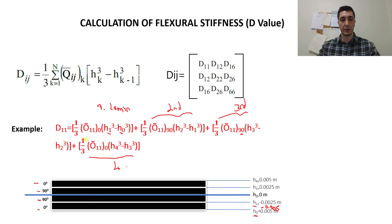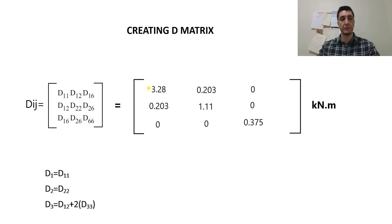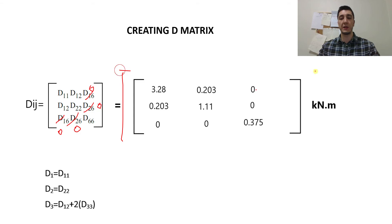So we have learned all of the D-values. We can now create the D-matrix according to our assumptions, because the D-1-6 and D-2-6 values will be zero. Copying in all the D-values gives us our complete D-matrix — the flexural stiffness matrix — which will be used in the calculations.